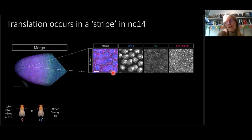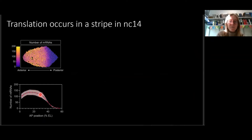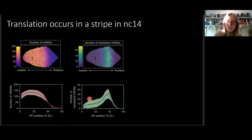This is even clearer when we zoom in. In these maximum projection images from the anterior, we see many SunTag-Hunchback mRNAs but very few co-localised with neon green spots. However, in the border region — which I'll call the stripe — there are fewer SunTag-Hunchback mRNAs, but they are highly co-localised with neon green spots. In quantification, the total mRNA follows the same gradient as in Nucleocycle 13, but the number of translated mRNAs is low in the anterior and high at the edge of the expression domain where this gradient occurs.